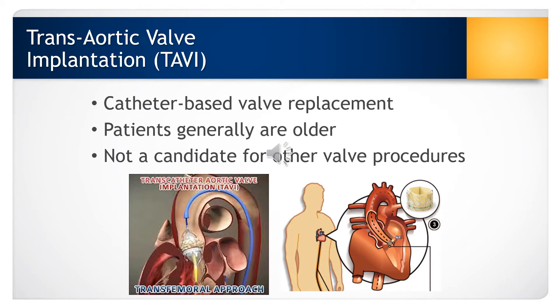The TAVI, or transcatheter aortic valve implantation, is a catheter-based valve replacement typically done on older patients who are not candidates for open heart valve replacement procedures. With the TAVI, the aortic valve is placed similarly to a cardiac catheterization — entering through the groin and traveling up to the heart to the site of valve placement, where the valve is then put in place and left there.